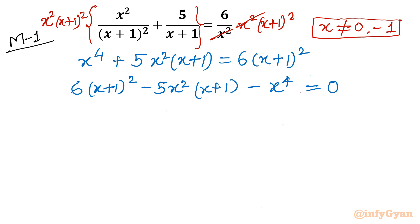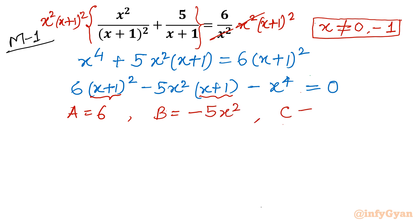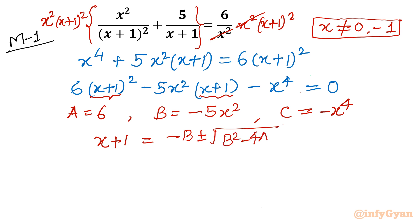This equation is quadratic in (x+1). Our variable term is (x+1), so we identify A = 6, B = −5x², and C = −x⁴. Now I will apply the quadratic formula: (x+1) = [−B ± √(B² − 4AC)] / (2A).